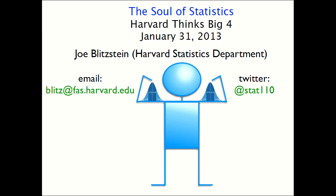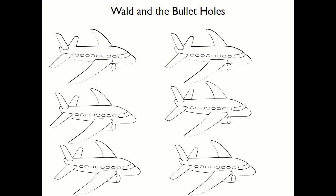Let's start with a motivating example before I tell you what I think the soul of statistics is. Abraham Wald was a famous statistician, and during World War II, too many British bombers were being shot down by the Nazis. He was consulting with them about trying to figure out where to put more armor. Armor is heavy and expensive — they can't put it everywhere. So where do you put it?